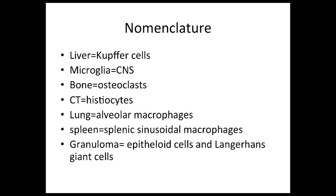Microglial cells protect the brain from different infections, but they have the advantage of not being exposed to as many infectious agents as other macrophages. This is because the central nervous system is granted a privilege due to the blood-brain barrier, which prevents many different pathogens from entering the CNS.